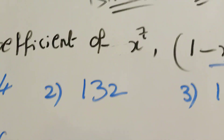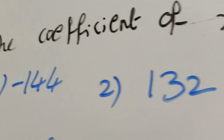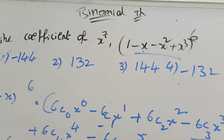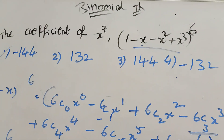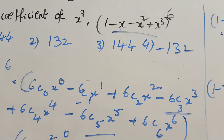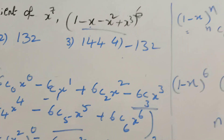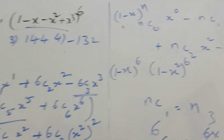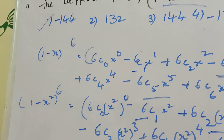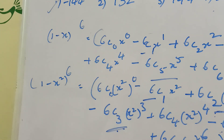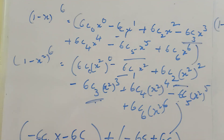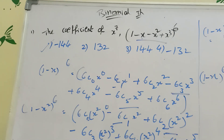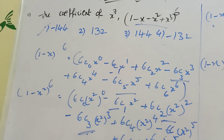The answer is minus 144. Where is the option? First option is minus 144 — that is the coefficient of x power 7. This is a very important model. Try the answer and put it in the comment box.